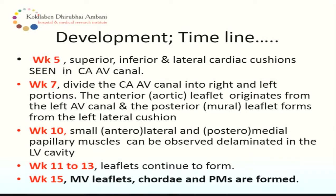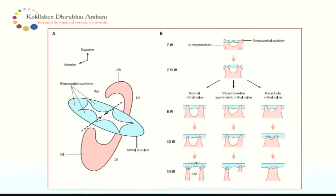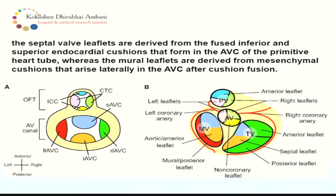The source of the mitral valve is mostly the superior, inferior, and lateral cardiac cushions seen in the common AV canal. This picture shows the ventricular cavity, the atrial cavity, and the endocardial cushions with their different indentations — it starts by the fifth to seventh week and by the fourteenth to fifteenth week the mitral valve is formed. The anterior leaflet component is formed from the superior and inferior part of the AV canal cushions, and the mural or posterior leaflet is from the left lateral component of the AV canal cushions.